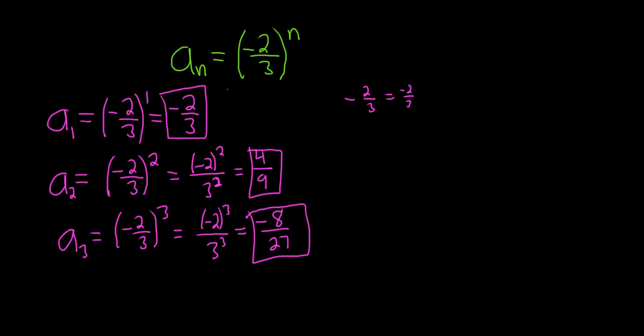If there was a 5 there, it would also be negative. If there's an 11 there, it's also negative. But if it's even, like if this was a 14 instead of a 3, then you would get a positive result. Let's go ahead and do a_4.